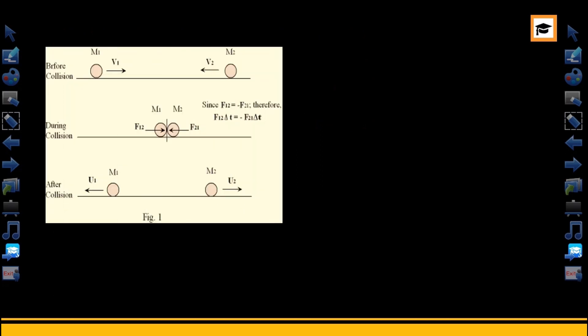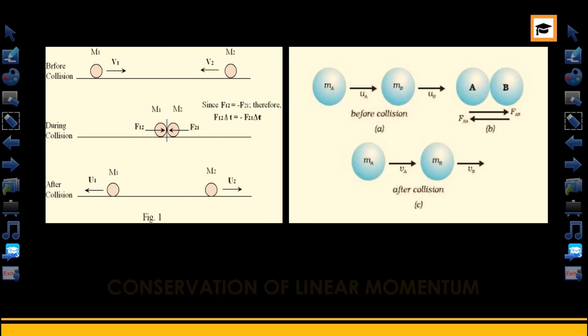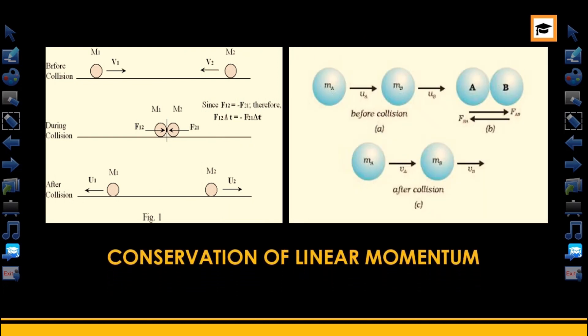Now let's take a look at a pictorial representation of conservation of linear momentum. In figure one, we have two balls moving in opposite directions. That is the first case, before collision. Moving in opposite directions, they have separate masses and separate velocities.